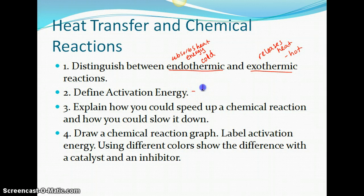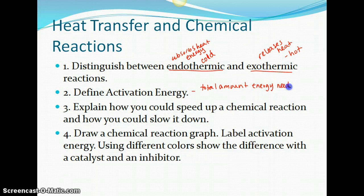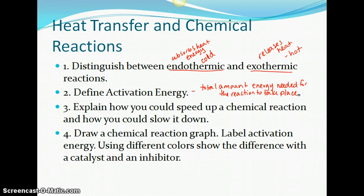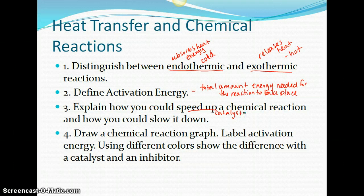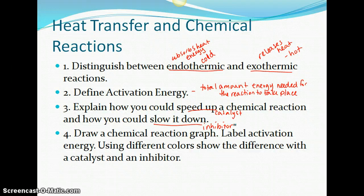Activation energy is the total amount of energy needed for the reaction to take place. Explain how you could speed up a chemical reaction. So speeding up would be a catalyst, and it lowers activation energy. It makes it happen faster. And how you could slow it down would be an inhibitor, and that is going to increase activation energy and make it be slower.